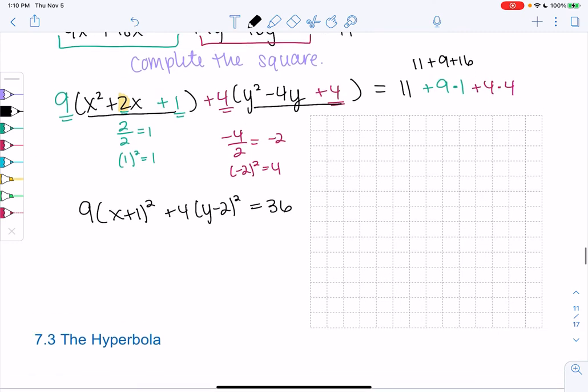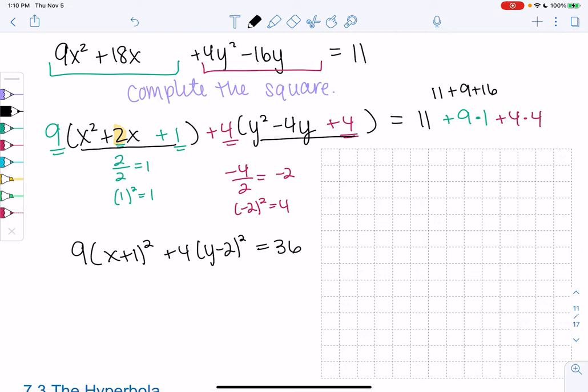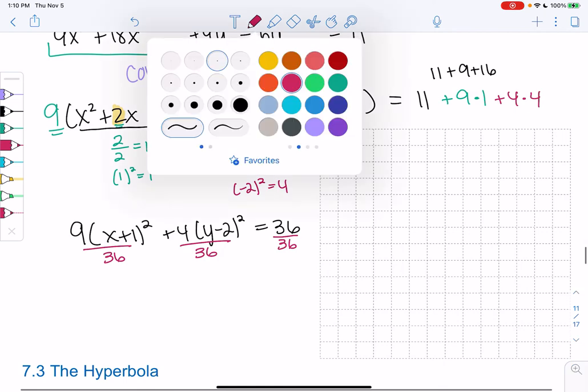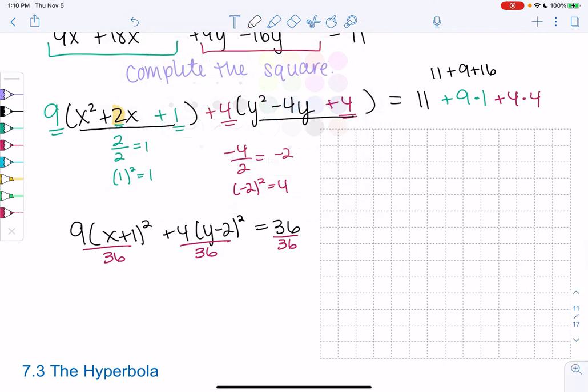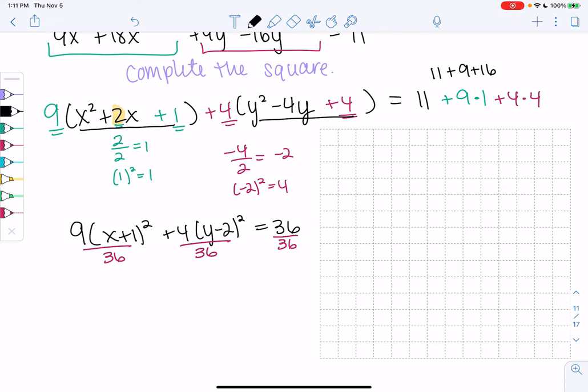And then what else do we need to do? We need to divide by 36 because we need the right side to be 1. So divide everything by 36. Go ahead and divide those and simplify.